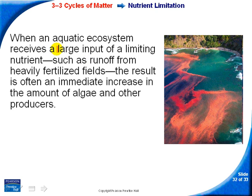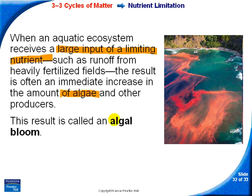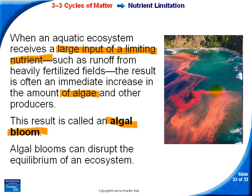Sometimes when you get a large input of a limiting nutrient — such as runoff from a heavily fertilized field putting nitrogen into the system — you'll get an incredible increase of some organism, often algae. This is called an algal bloom, shown here as a red algae in the water, likely caused by runoff of fertilizer. The problem is this sudden increase in one organism can start causing shortages of other nutrients and create great disruption in the equilibrium.